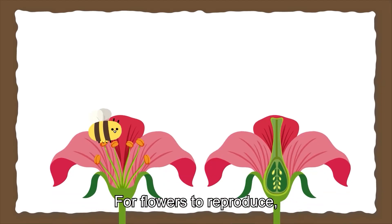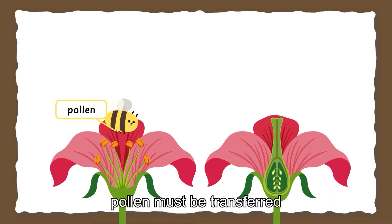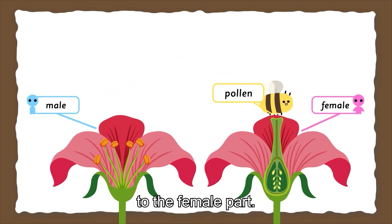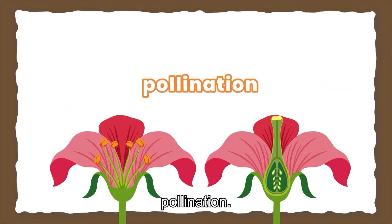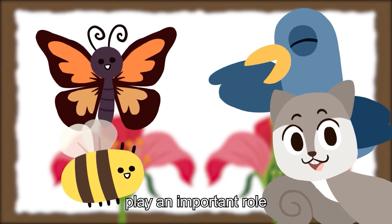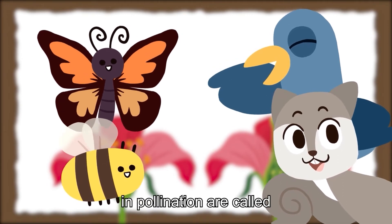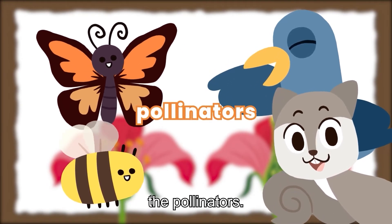For flowers to reproduce, pollen must be transferred from the male part to the female part. This process is called pollination. Insects and animals that play an important role in pollination are called the pollinators.